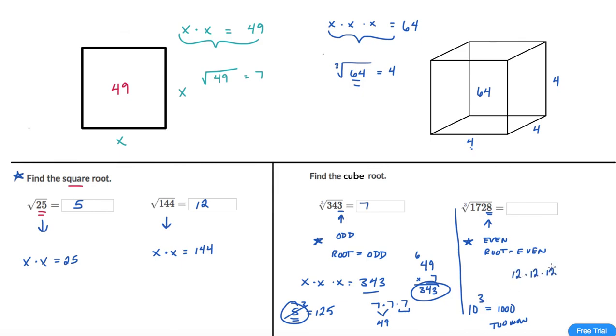So 12 times 12 times 12 is my guess. I think this is going to be right. 12 times 12 is 144. And then 144 times one more 12. 2 times 4 is 8. Off to a good start. 2 times 4 is 8 again. 2 times 1 is 2.